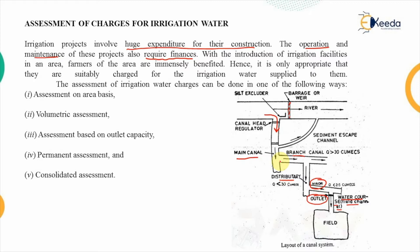The assessment of irrigation water charges can be done in the following ways: first, assessment on the area basis; second, volumetric assessment; third, assessment based on outlet capacity; fourth, permanent assessment; and fifth, consolidated assessment. We will discuss all of them one by one.